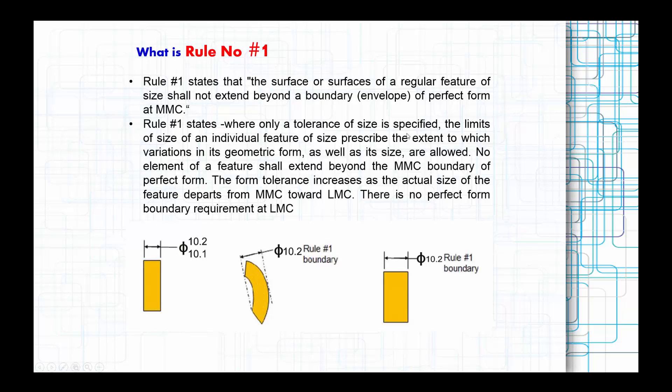This rule says that the surface or surfaces of a regular feature of size (FOS) shall not extend beyond a boundary envelope of perfect form at MMC, the Maximum Material Condition. It should not extend beyond that.